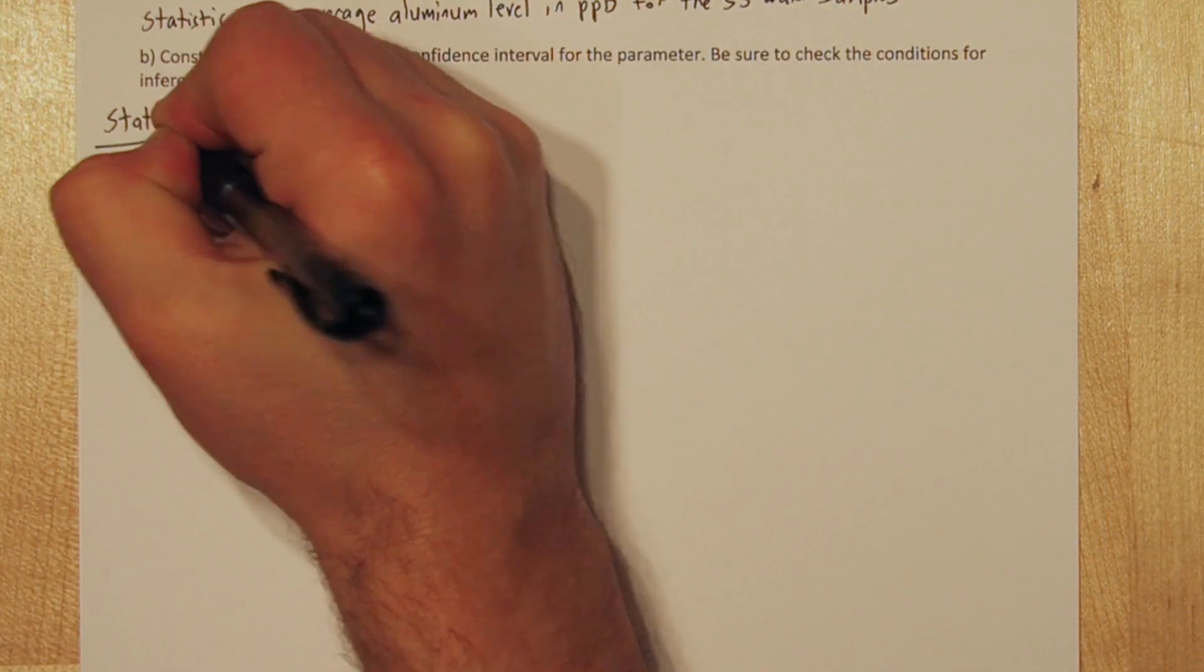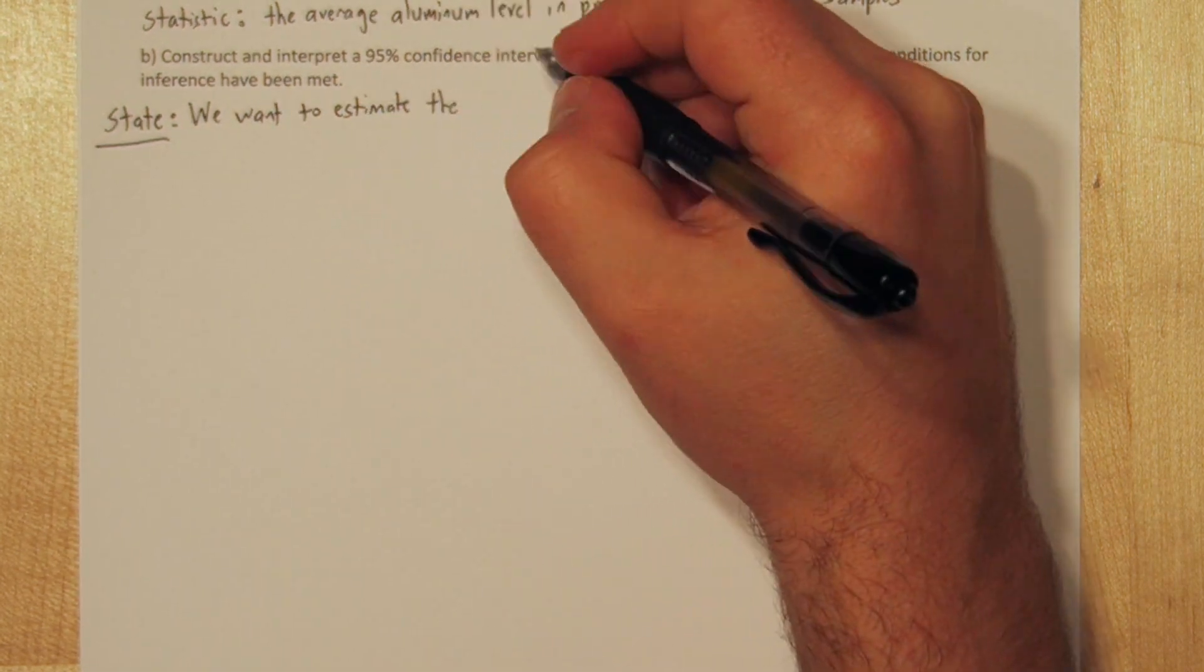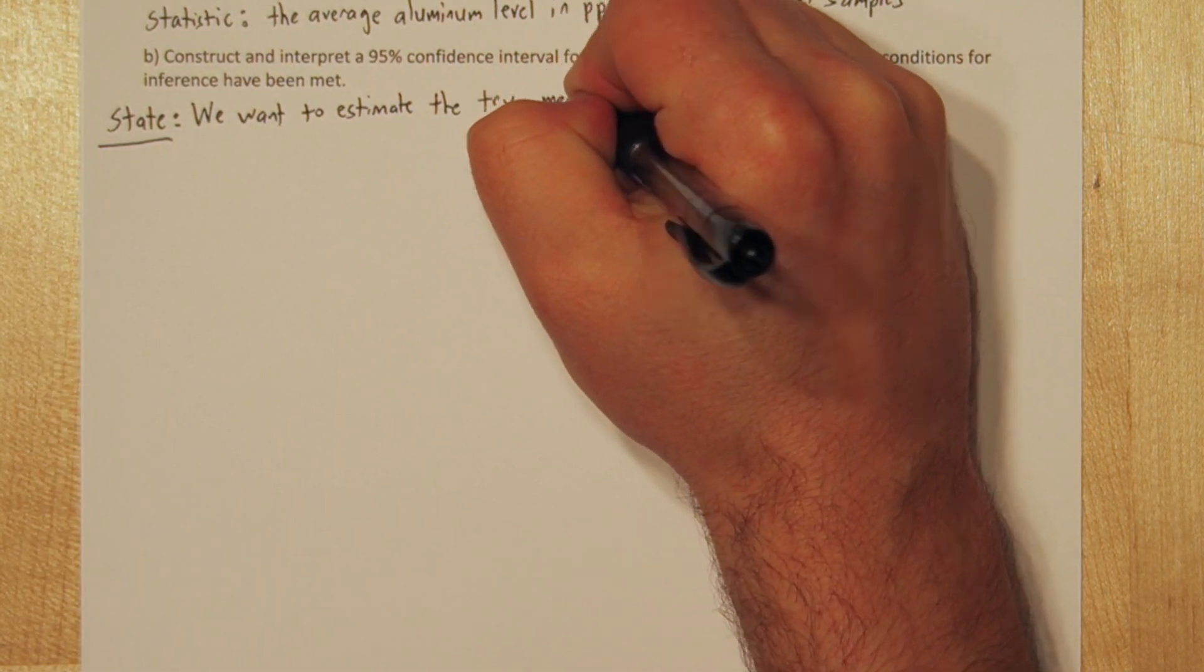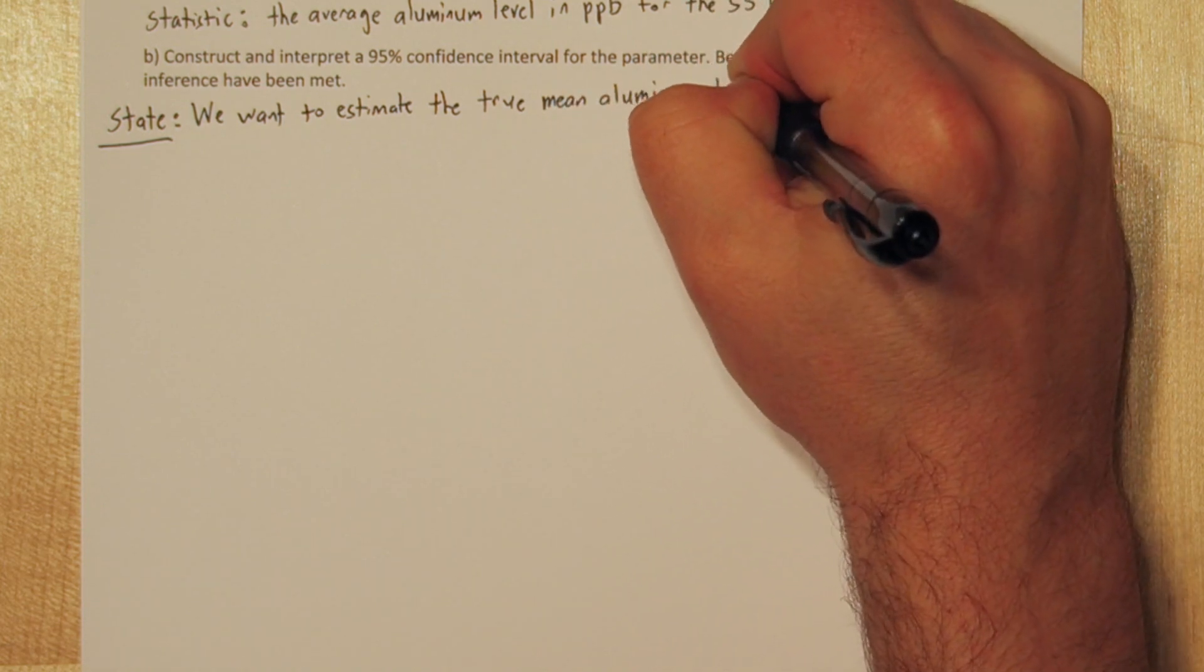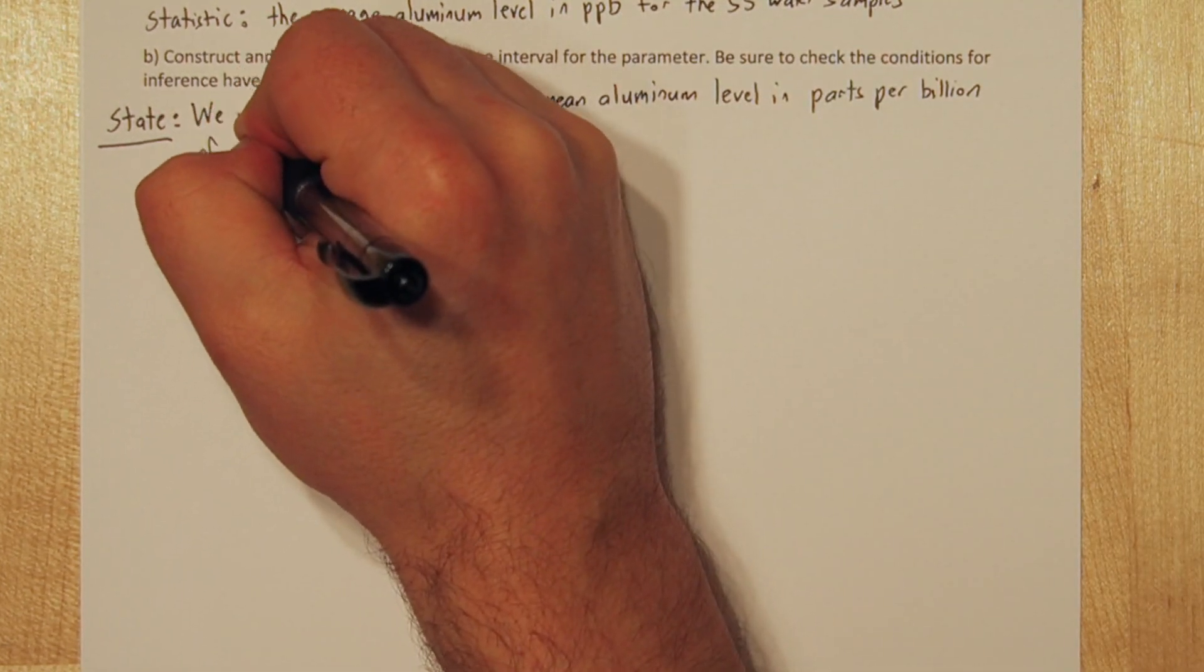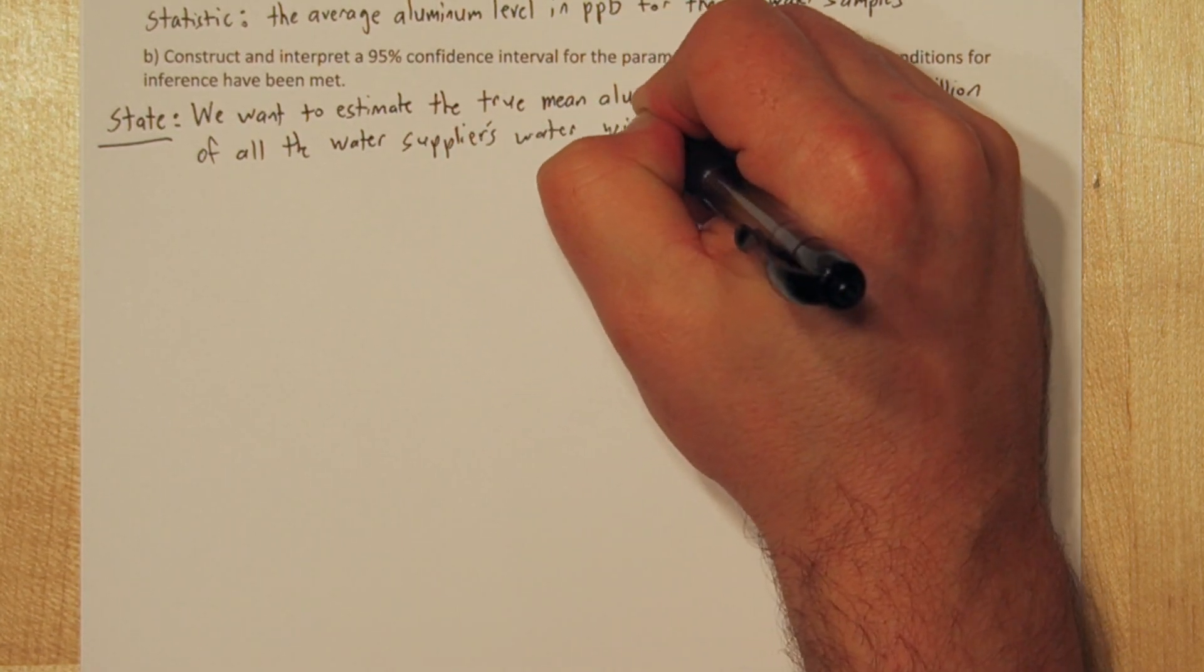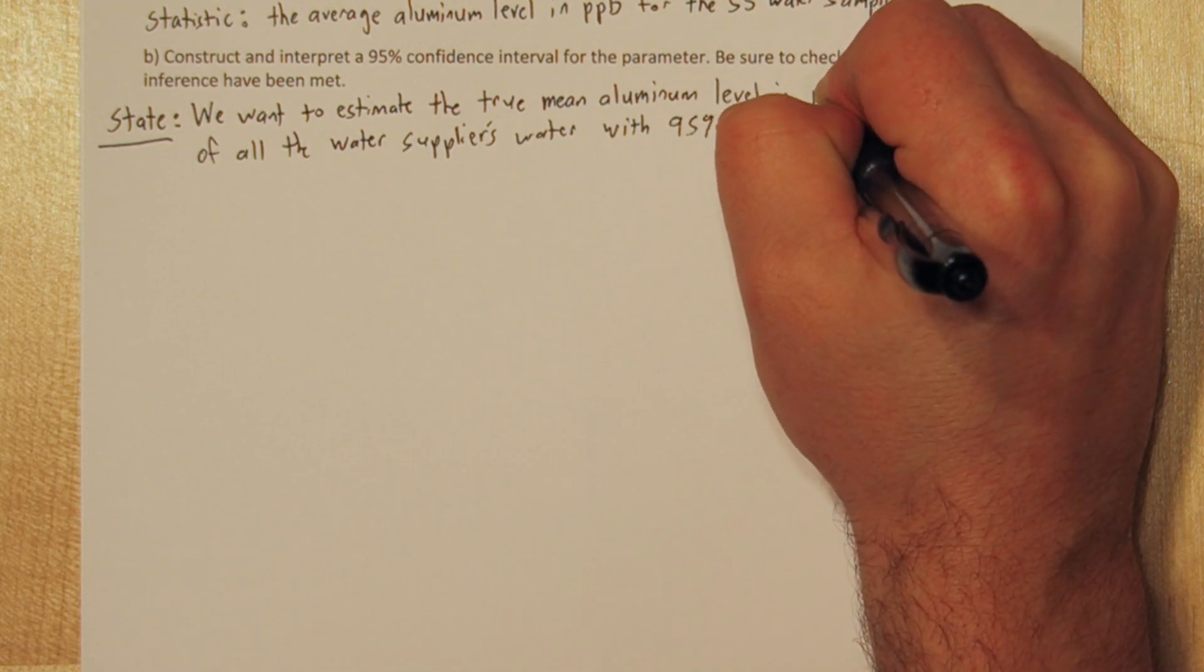Let's use the four-step solving process. So for state, we want to estimate the true mean aluminum level in parts per billion of all the water supplier's water with 95% confidence. So there's two things in our state step: the parameter of interest, which is the true mean aluminum level, and the confidence level, which is 95%.